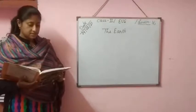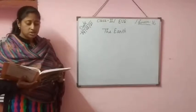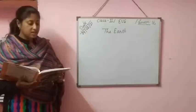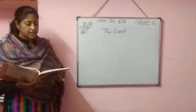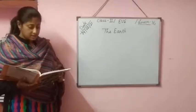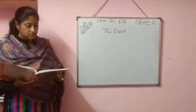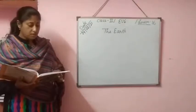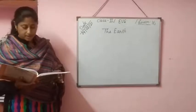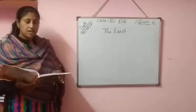Lakes are large freshwater bodies which are surrounded by land on all the sides. Rivers are flowing freshwater bodies. These mainly originate from mountains and end into the sea.